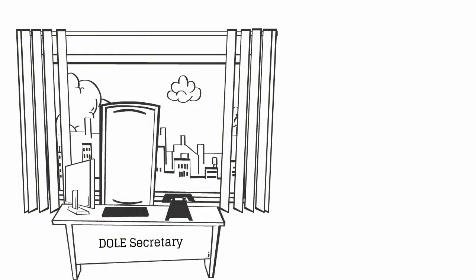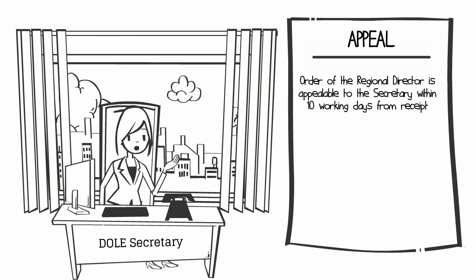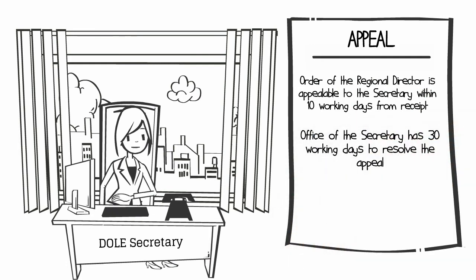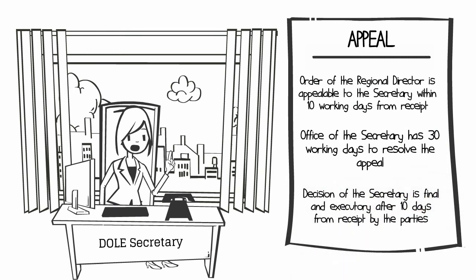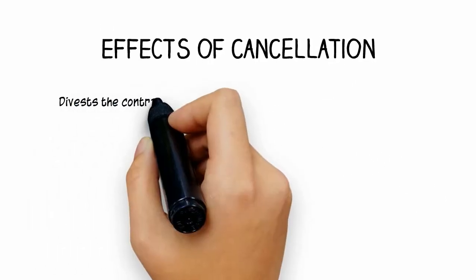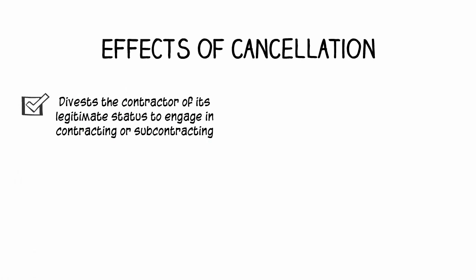The order of the Regional Director is appealable to the Secretary of Labor within 10 working days from receipt of the order. The Office of the Secretary has 30 working days from receipt of the records of the case to resolve the appeal. The decision of the Secretary shall become final and executory after 10 days from receipt by the parties.